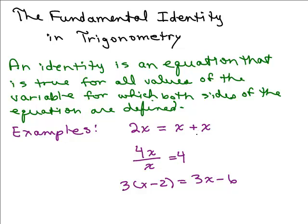2x equals x plus x. No matter what value you put in for x, this will be true. Or 4x over x, the x's will always cancel and make that equal to 4. So it doesn't matter what value you put in for x, right?